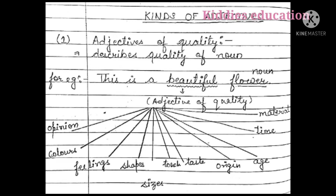Firstly, we will read about adjectives of quality. Adjectives of quality are words which describe the quality of a noun. For example, 'this is a beautiful flower.' In this sentence, flower is a noun, and beautiful describes how the flower looks, so beautiful is an adjective of quality.